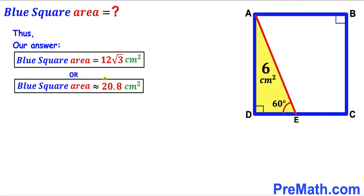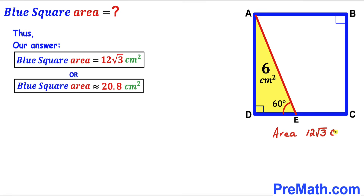In other words, this is approximately equal to 20.8 cm² as well. So the area of this blue square is 12√3 centimeters squared — that's our final answer.